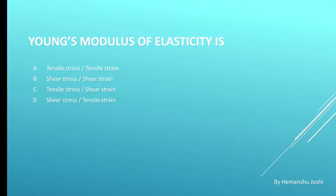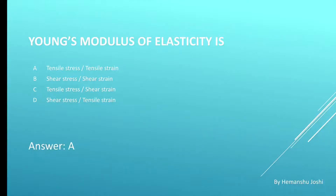Next question. Young's modulus of elasticity is: options are A. Ratio of tensile stress by tensile strain, B. Shear stress by shear strain, C. Tensile stress by shear strain, and D. Shear stress by tensile strain. Correct answer is A. Tensile stress by tensile strain.